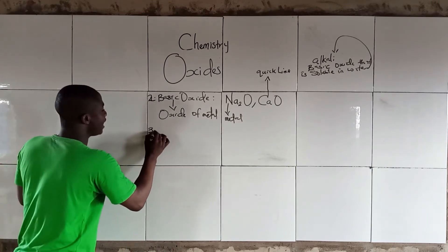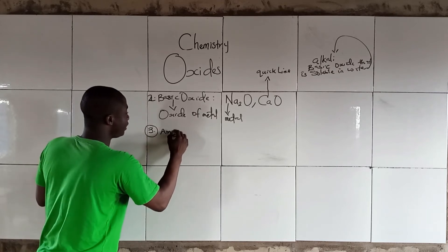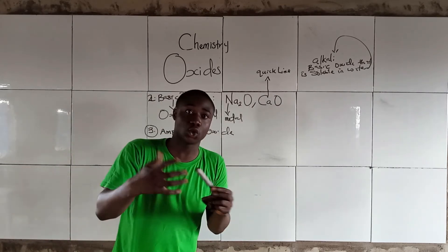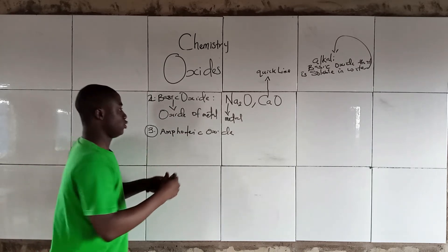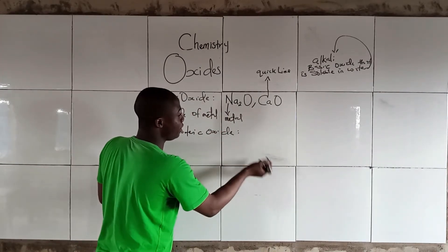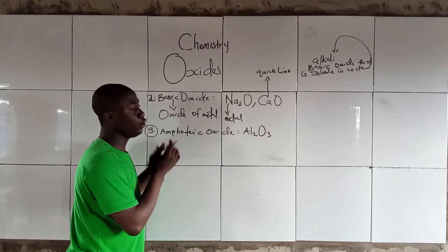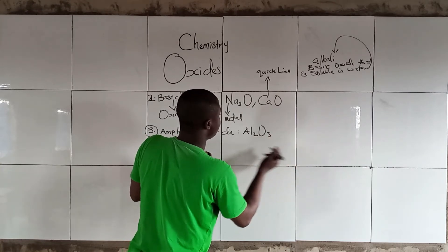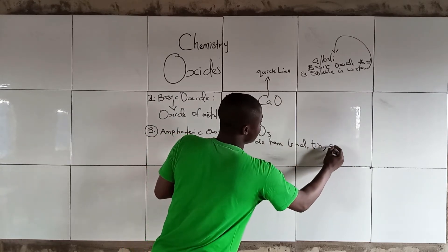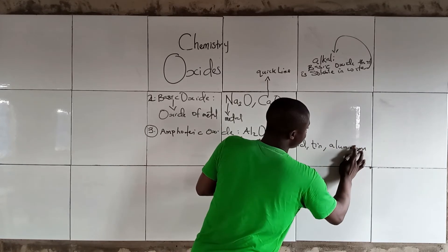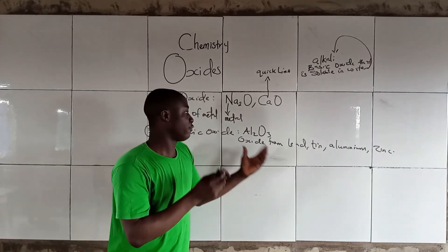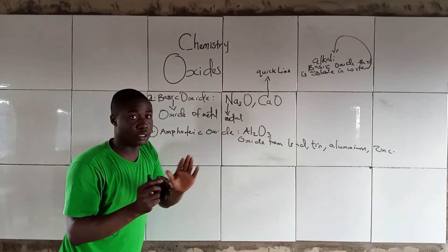The third type is the Amphoteric Oxide. From the word amphoteric, it means it has a dual nature — it behaves as both an acid and a base. These are oxides that have properties of both acids and bases, such as Aluminium Oxide, Al2O3. Amphoteric oxides come from Lead, Aluminium, and Zinc.